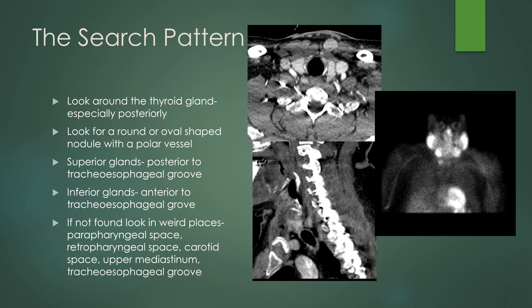Here's an example of a parathyroid adenoma. You can see this round nodule posterior to the right lobe of the thyroid gland — separate from it, with a little bit of plane visible on the axial image. Here it is on the sagittal image: the nodule, the thyroid gland, and here's the representative Sestamibi scan, which shows uptake in that right thyroid bed separate from the thyroid gland. This is a classic appearance of a parathyroid adenoma on post-contrast imaging and the nuclear medicine Sestamibi scan.